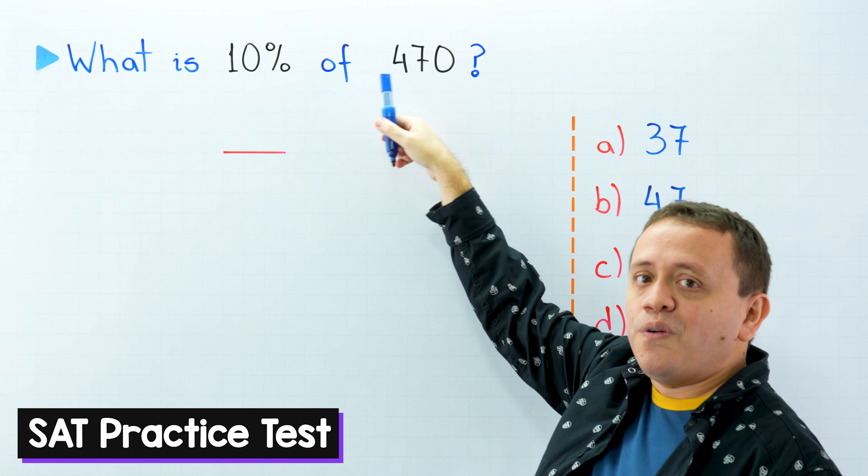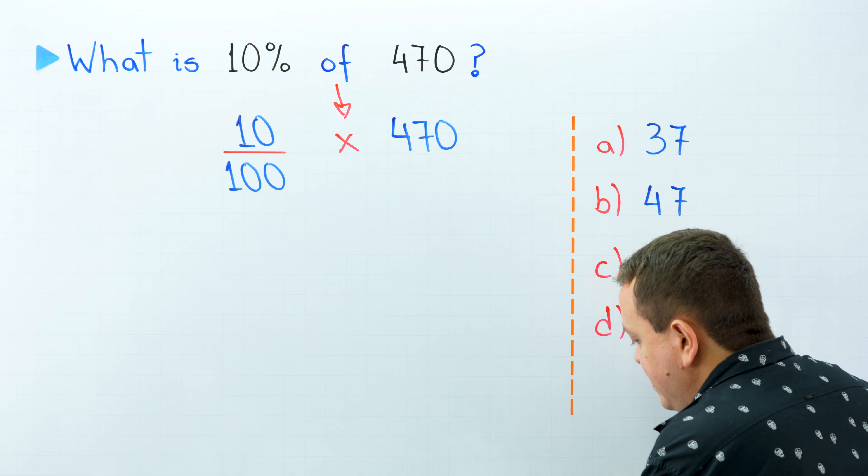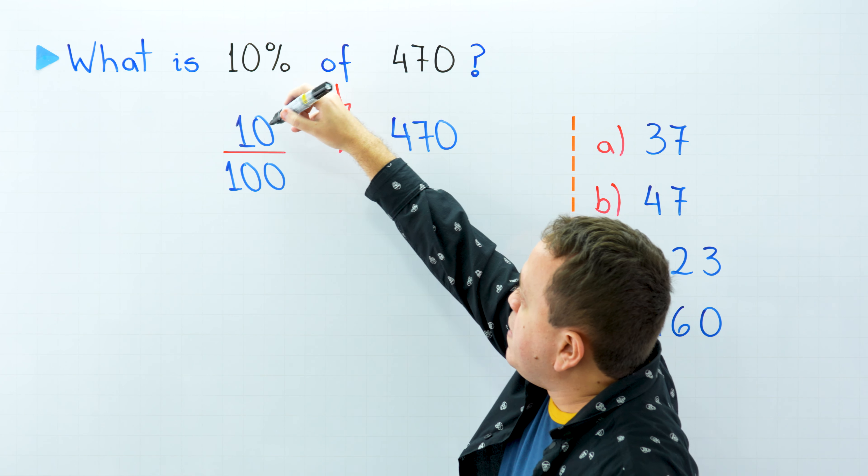This is a classical percentage problem and we're going to start rewriting 10% as 10 over 100. We can rewrite 10% as 10/100. Then we're going to replace the word 'of' with the multiplication sign. Never forget that you can replace the word 'of' with the multiplication sign. Finally, we keep the 470.